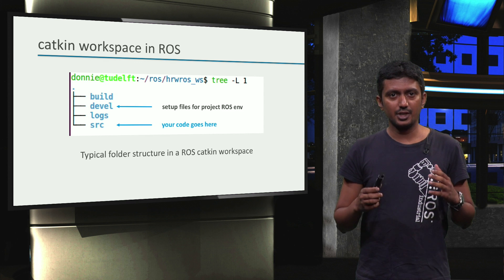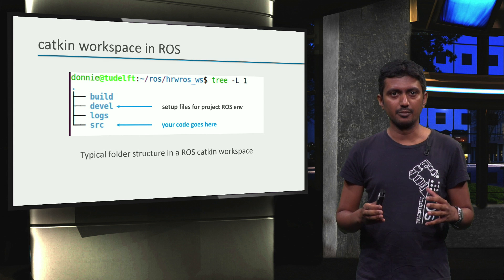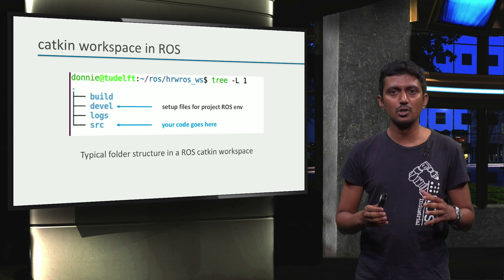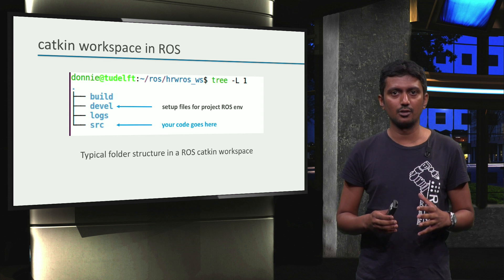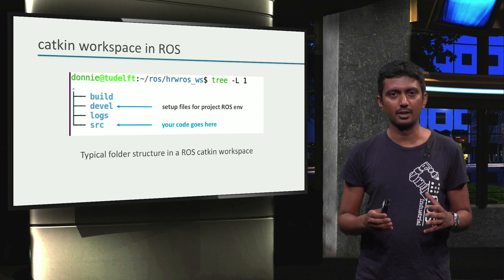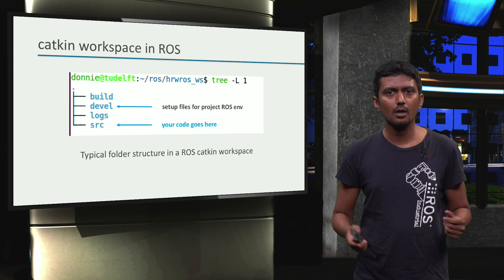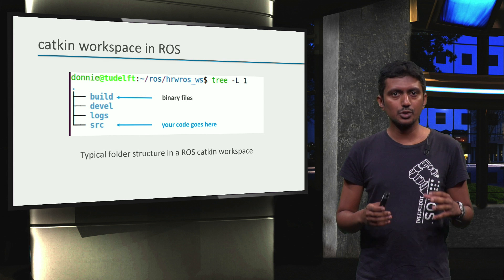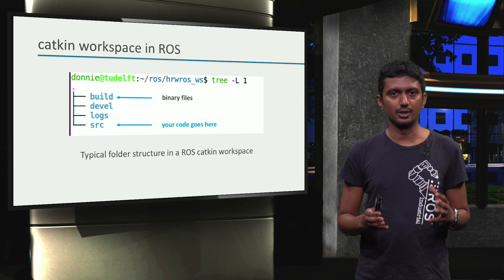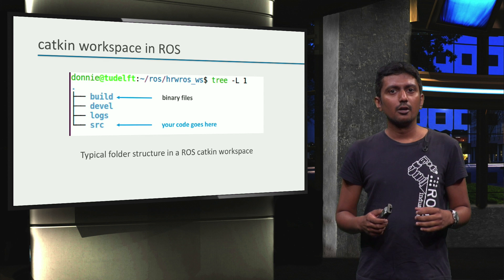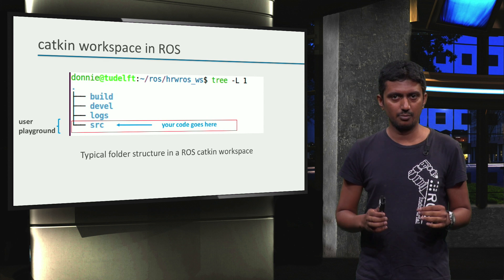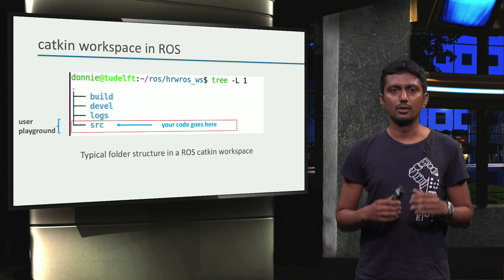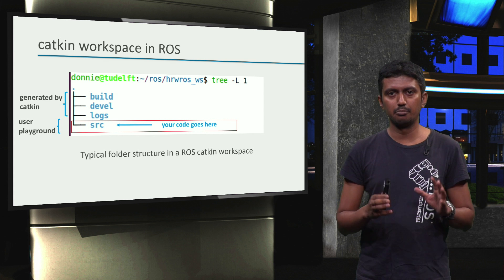The files for setting up a project-specific ROS environment are in the devel folder. Along with these files, the devel folder also contains the executables of your source files for development and testing. The build space is used by the build tool CATKIN to store some intermediate files, like object files, during the build process. When we write code for our own ROS applications, the source folder is our playground. The remaining folders are generated by the build tool CATKIN.